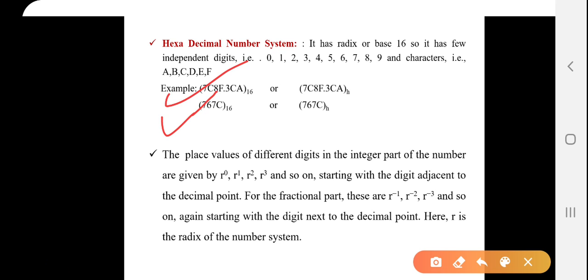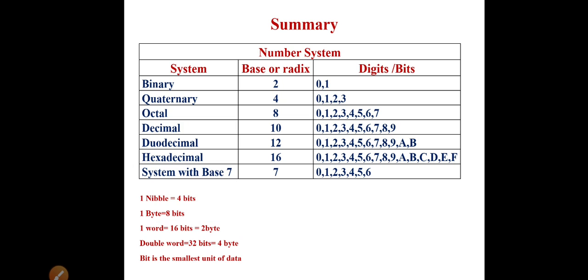The place values of different digits in the integer part of the number are given by R to the power 0, R to the power 1, R to the power 2, R to the power 3, and so on, starting with the digit adjacent to the decimal point. For the fractional part, these are R to the power minus 1, R to the power minus 2, minus 3, and so on, again starting with the digits next to the decimal point. Here, R is the radix of number system.